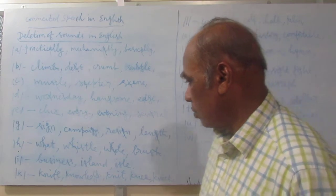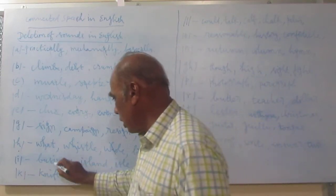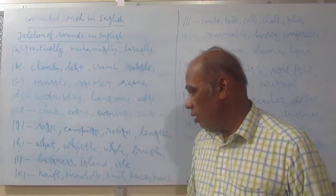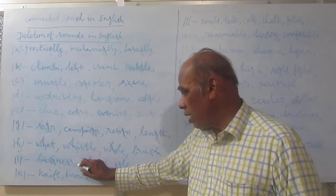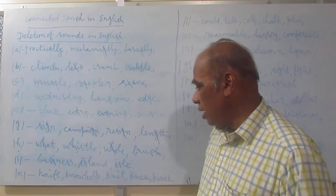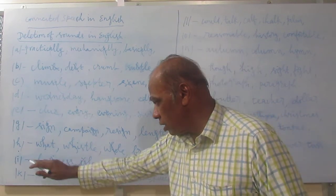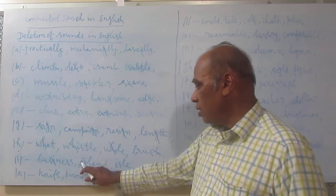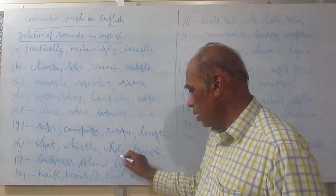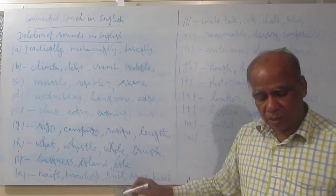Next, the 'i' sound is deleted in certain words. Business — we don't say 'business', it's 'business'; here the 'i' sound is deleted. Island — actually the 'i' sound is deleted; it's 'island', not pronounced as it's spelled.